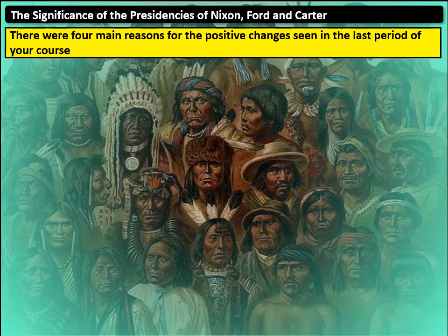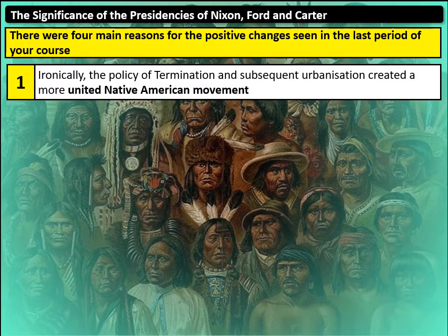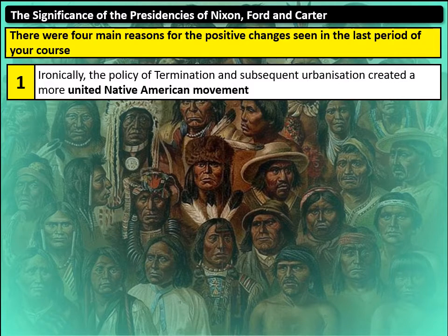During the 1970s there are really four main reasons why we see some positive changes for Native American civil rights. The first of these reasons is that ironically the policies of the 50s and 60s, such as termination and the encouragement of urbanization amongst Native Americans, actually creates a more united Native American movement.